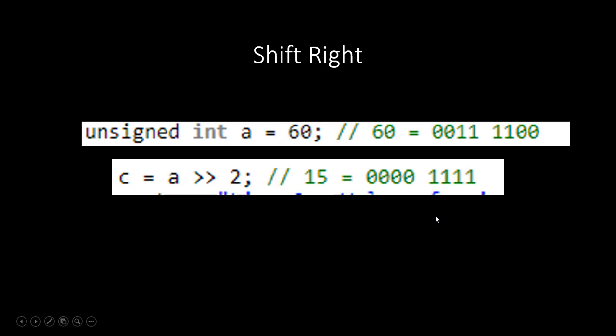Shift right is similar. With 60 represented as 0, 0, 1, 1, 1, 1, 0, 0, shifting right by 2 moves all bits two positions to the right, resulting in 0, 0, 0, 0, 1, 1, 1, 1 — giving us the value of 15.